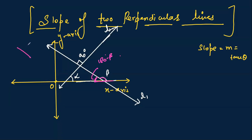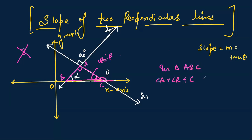When two lines are perpendicular and intersecting at a point, the vertically opposite angles are equal. So if one angle is 90 degrees, the opposite is also 90 degrees. Looking at the triangle formed, we apply the angle sum property: all three interior angles sum to 180 degrees. Let's label the vertices A, B, and C. So angle A plus angle B plus angle C equals 180 degrees.